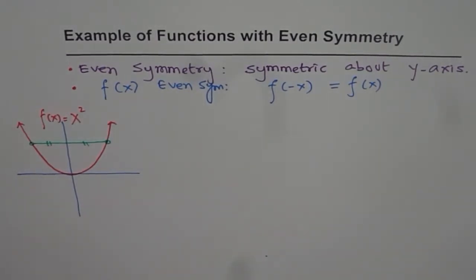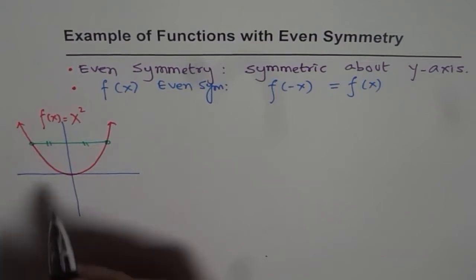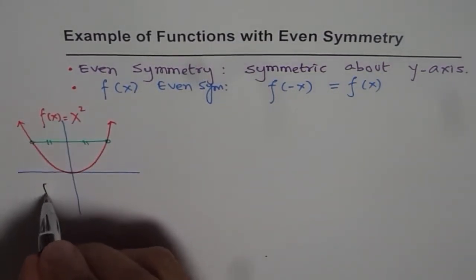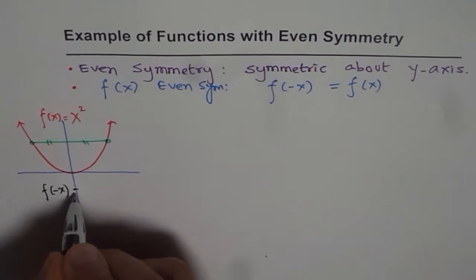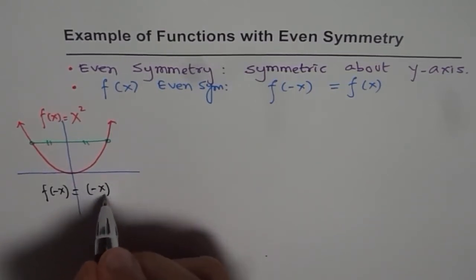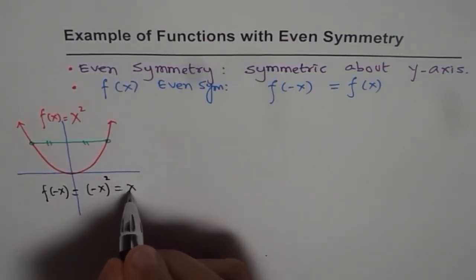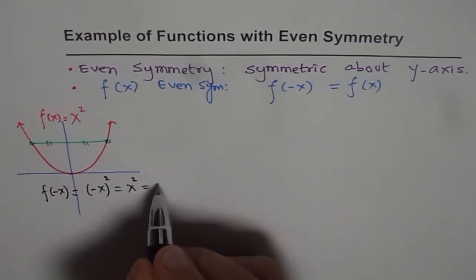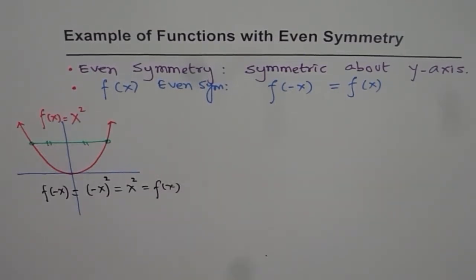Now, in this example which we have taken, if I write f(x) is x squared, what is f(-x)? f(-x) will be (-x) squared, which is same as x squared. So this is same as f(x). So that is the second definition, or I should say algebraic proof that the function is indeed even.